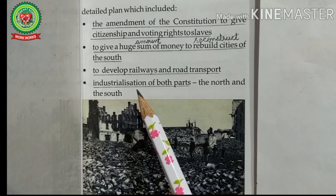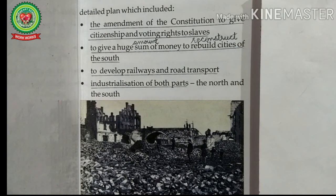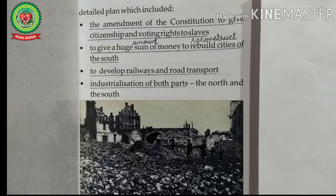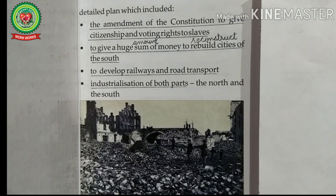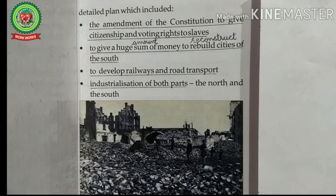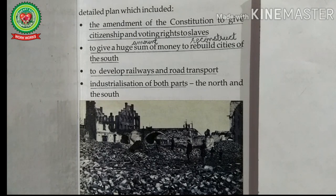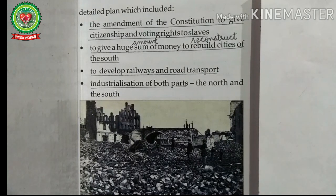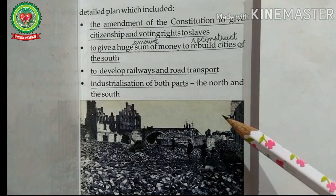Abraham Lincoln started planning for the reconstruction of the south during the civil war itself, as Union soldiers occupied large areas of the south. He wanted to bring the nation back together as quickly as possible. In December 1863 he offered his plan for reconstruction, which required that states' new constitutions prohibit slavery. In January 1865, Congress proposed an amendment to the Constitution to abolish slavery in the United States. On December 18, 1865, Congress ratified the 13th Amendment, formally abolishing slavery. All these plans were made for the reconstruction of the United States.